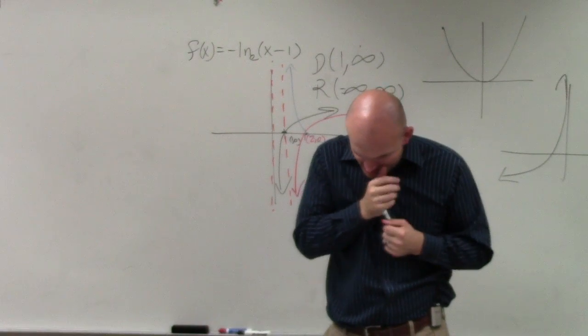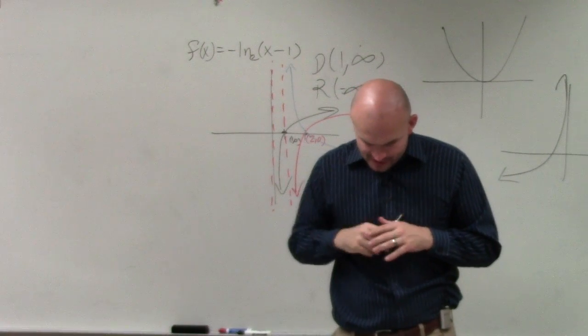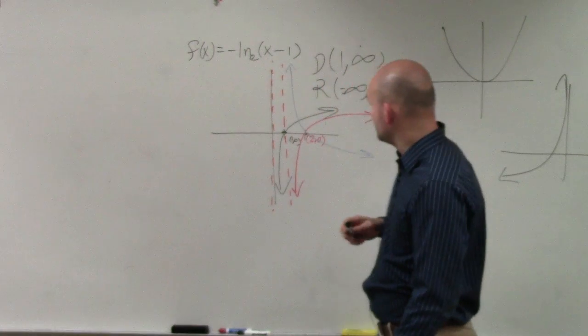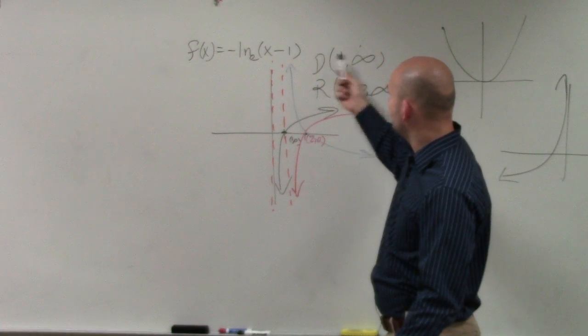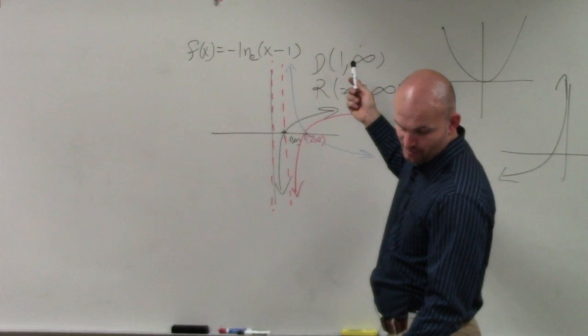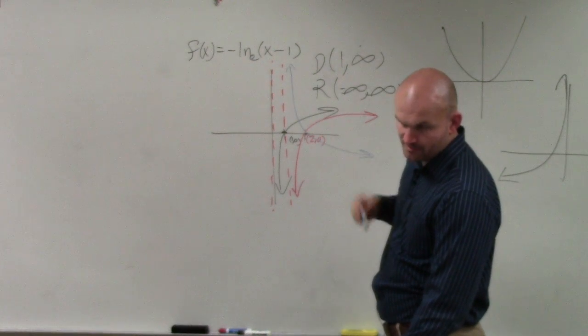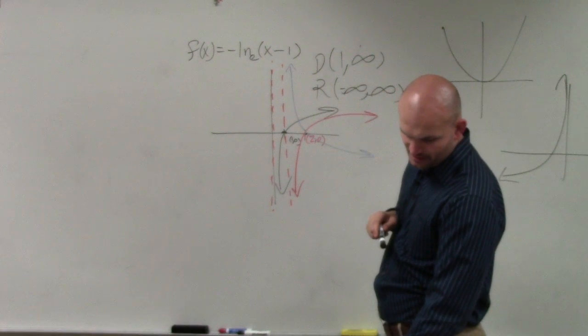Next thing is they say continuity. That is continuous on all events. Increasing or decreasing. From 1 to infinity, the graph is decreasing. So you could just say from the interval 1 to infinity, it's decreasing.